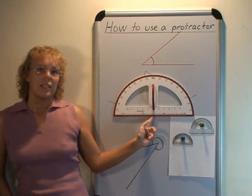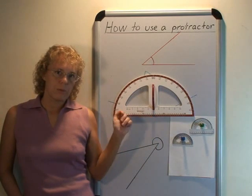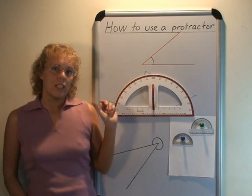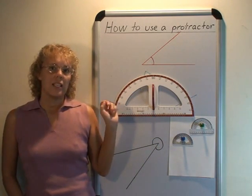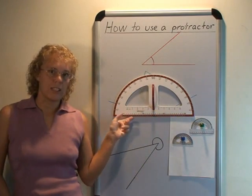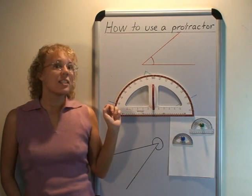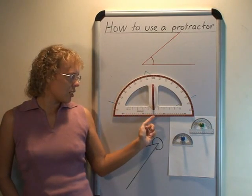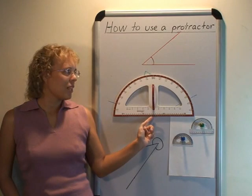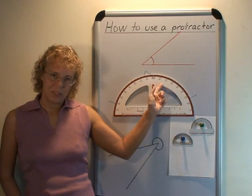The important thing in using a protractor is that we need to line up the side of the angle with the baseline of the protractor. We need to line up the vertex or the corner of the angle with the origin here. And then we need to remember to read the right set of numbers.